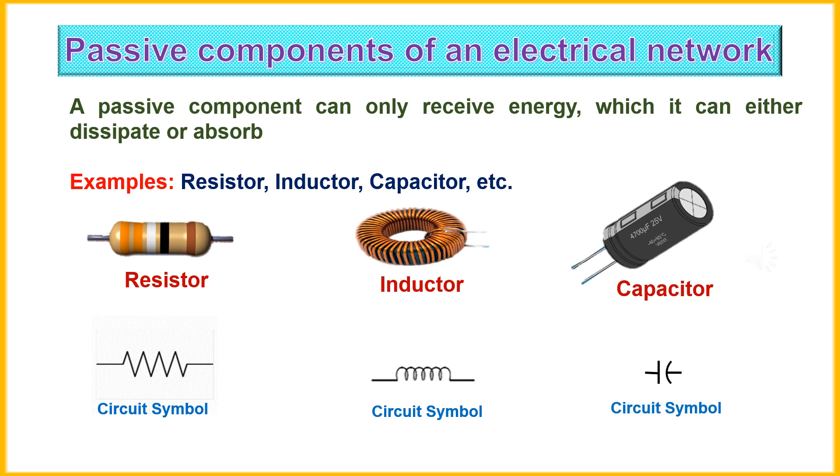A passive component can only receive energy which it can either dissipate or absorb. Resistor, inductor and capacitor are examples for passive components of an electrical network.